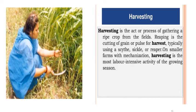Now we are going to see another agriculture practice — it is harvesting. Harvesting is a practice done by the farmer when the crops are ready, that is when the crops become mature. In definition, harvesting is called the process of cutting and gathering of crops. The farmer will do harvesting either manually or using machines available in the market.